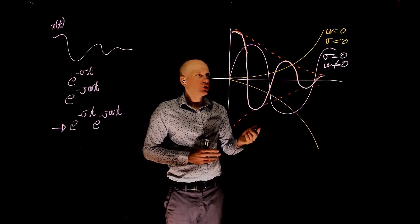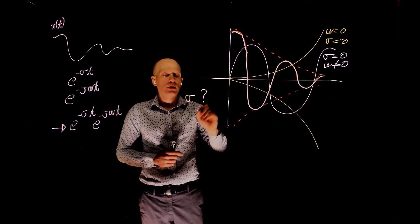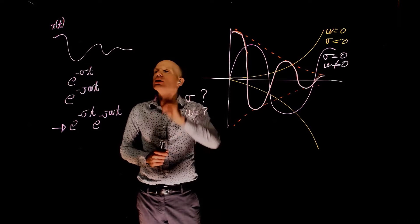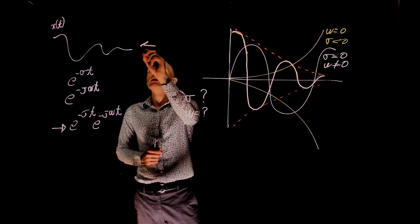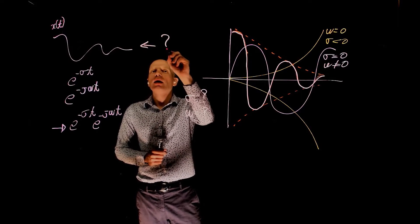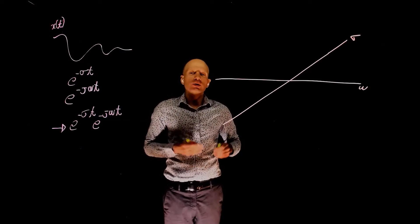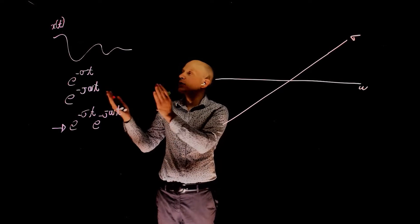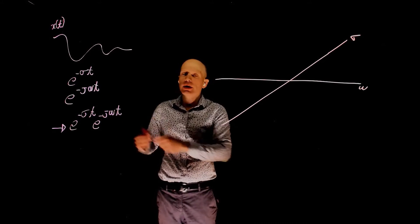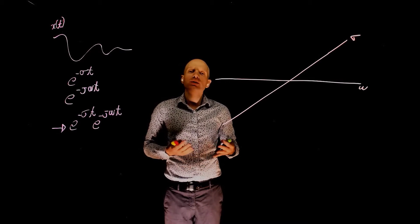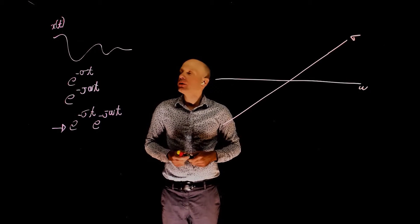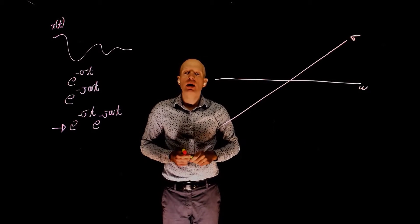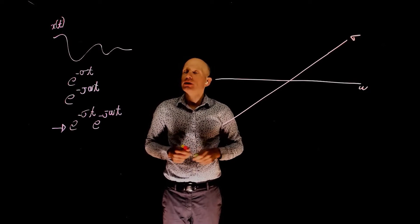The question is: what is sigma and what is omega that we need to create x of t? To find that, we need to create some signals and compare those signals with x of t. Let's call those signals — created using random combinations of sigma and omega — a probing signal.